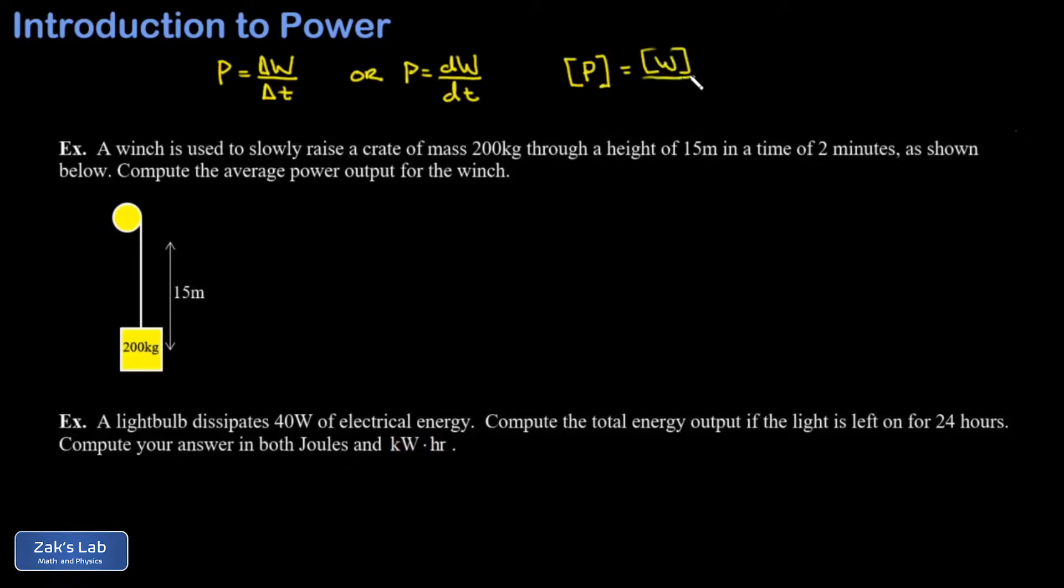The units of power are given by the units of work divided by the units of time, so that comes out to joules per second, and this gets a special name: it's called a watt.